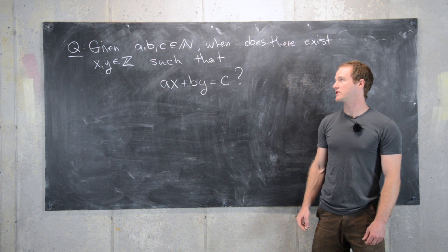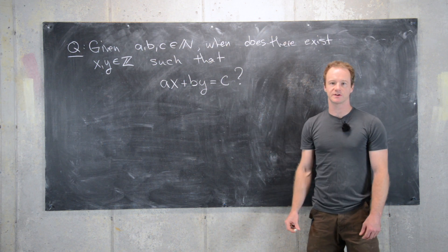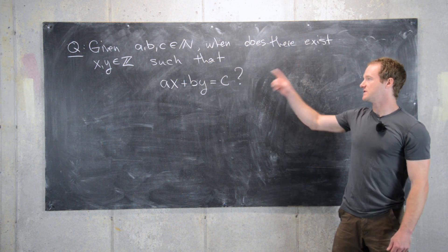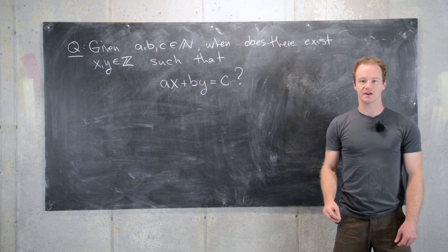Okay, in this video we want to look at the following question. Given natural numbers a, b, and c, when does there exist integers x and y such that ax plus by equals c?